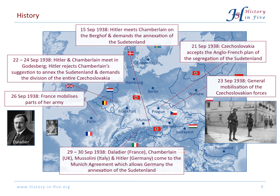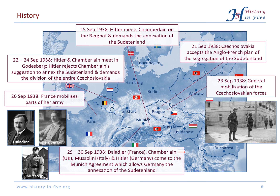Then came the Munich Conference with Daladier for France, Chamberlain for the UK, Mussolini for Italy, and Hitler for Germany. They came to the agreement that Germany would annex the Sudetenland, and on the 1st of October the German military marched into this territory.